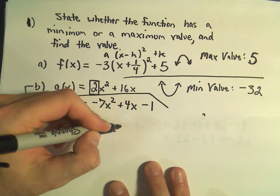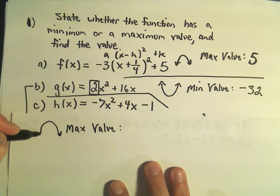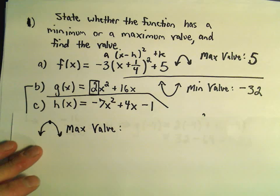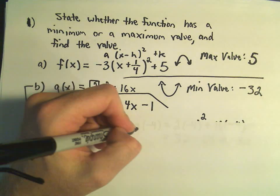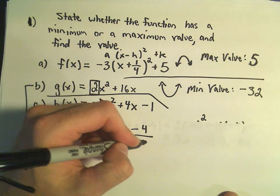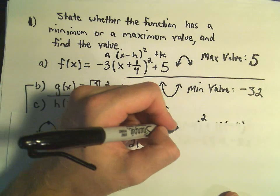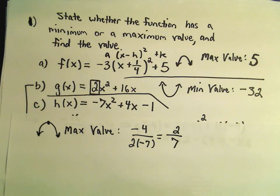Again, the leading coefficient a is negative, so I know it's opening downwards, which means it's going to have a maximum. And again, I'm just going to do the same thing. I'll take my negative b, which is positive 4, over 2 times a, which is negative 7. And let's see, that's going to give us a positive 2 over 7 after we simplify.